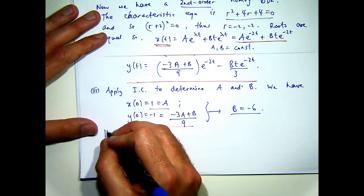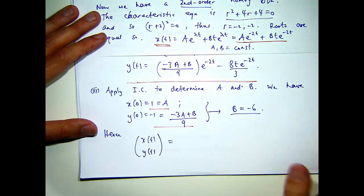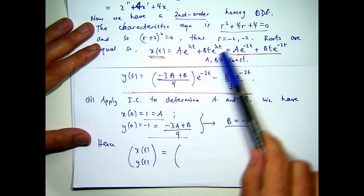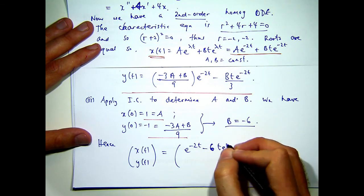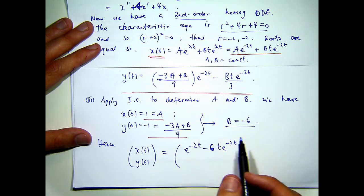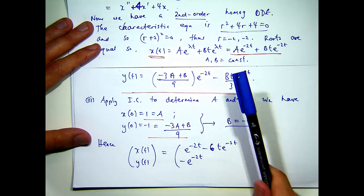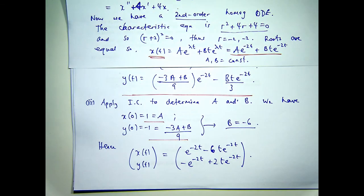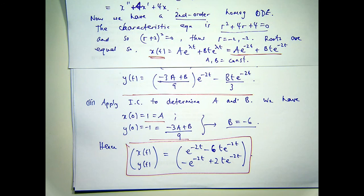So if a is 1 and b is minus 6, that should give us minus 1 there or negative 1. And that will give us something like positive 2. So that is the solution for our system with initial conditions.